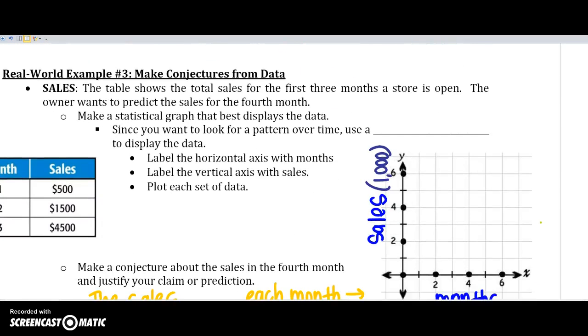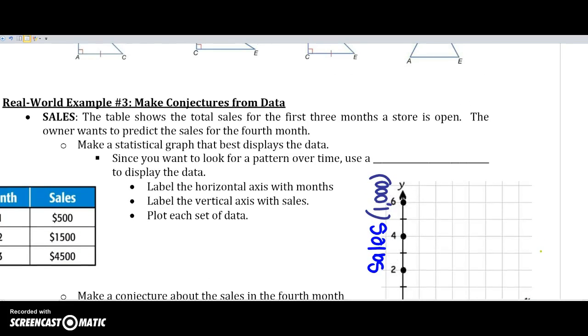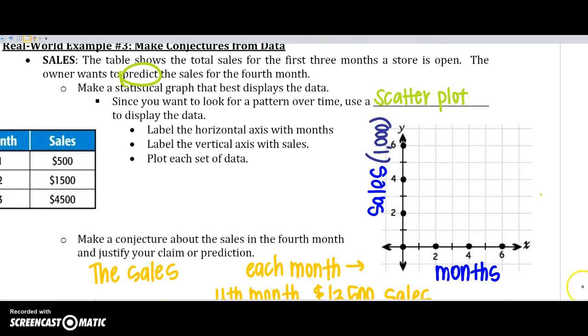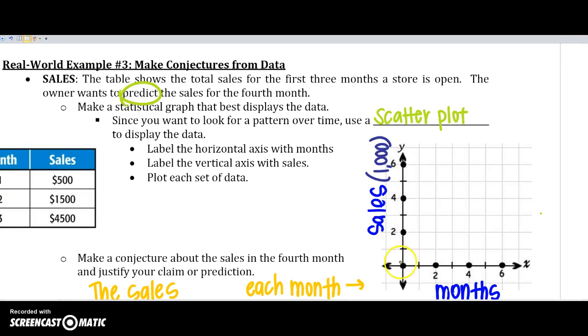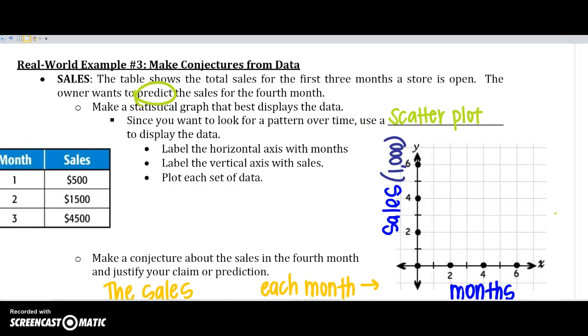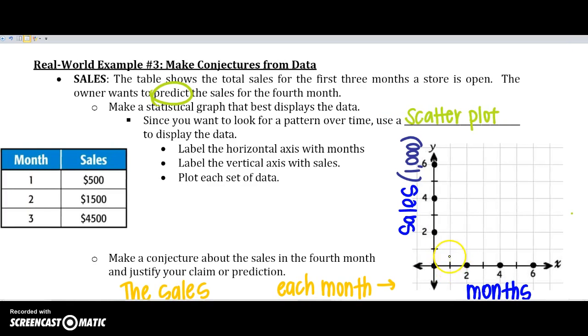And last two things. Make a conjecture from the data. So, the table shows the total sales for the first three months the store is open. The owner wants to predict, or make an educated guess, or use inductive reasoning for the sales for the fourth month. We're going to make a statistical graph using a scatter plot. So, we're going to label our horizontal and vertical lines. And I put that my vertical line is in the thousands. So, my first month is going to be $500. So, first month, $500. Second month, $1,500. Third month, $4,500.